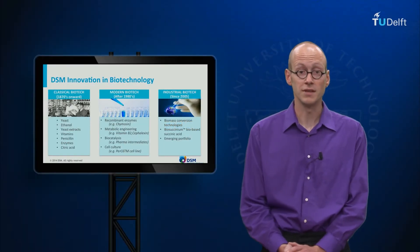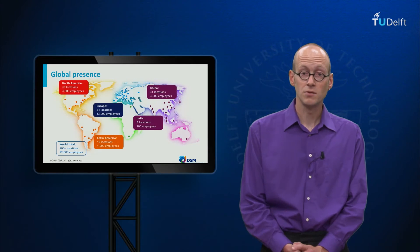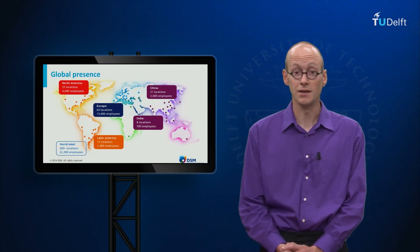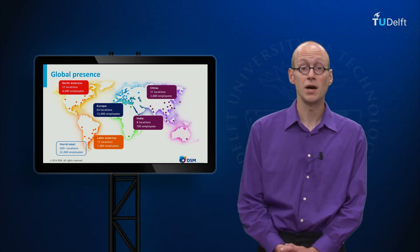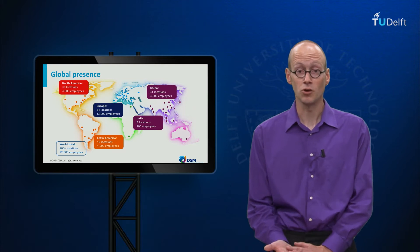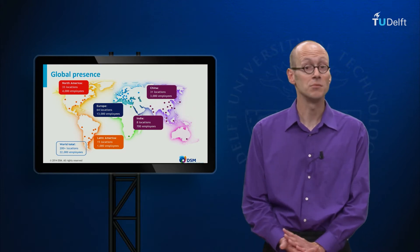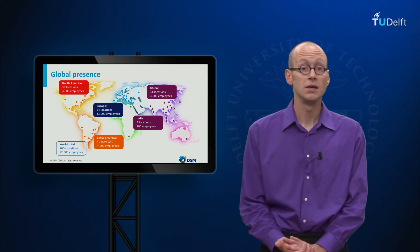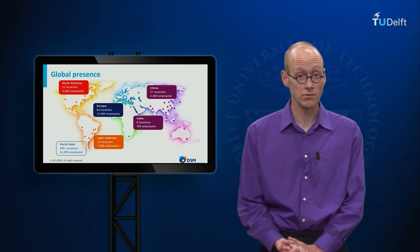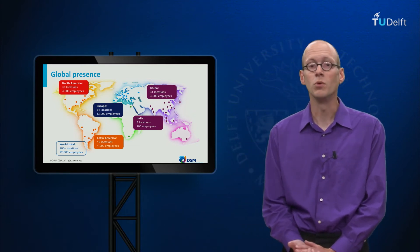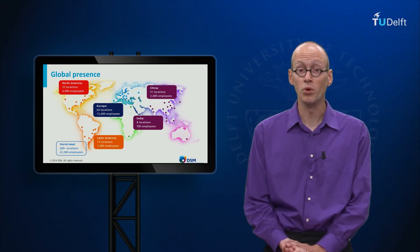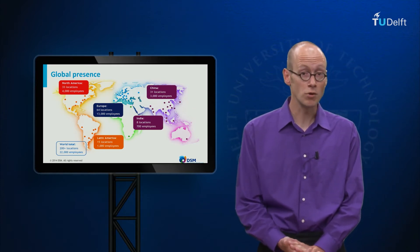Succinic acid is an example of that. Looking at the history, DSM originated one century ago as a mining company in the Netherlands, and transformed itself throughout the decades from a mining company into a chemical company. Currently we call ourselves a life sciences and material sciences company. DSM has become a very international company as you can see in this graph. We are located all over the world; recently we focus more on Asia and Latin America, becoming important new and growing markets for us.